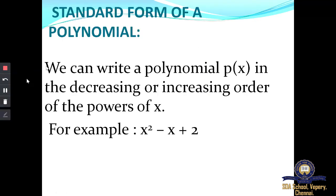We also studied about the standard form of a polynomial. So how can you write a polynomial P of X? You can either write it in decreasing or increasing order in the powers of X. For example, you first write X power 2, then power 1, and then a constant.